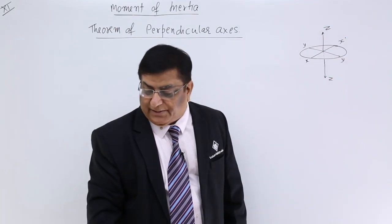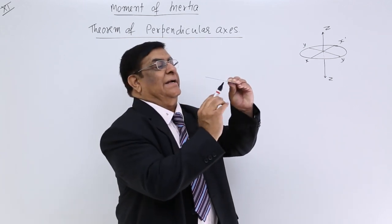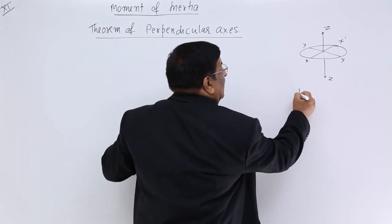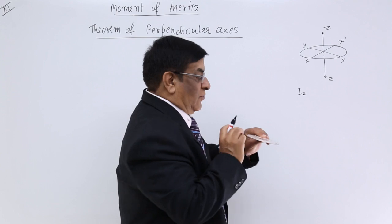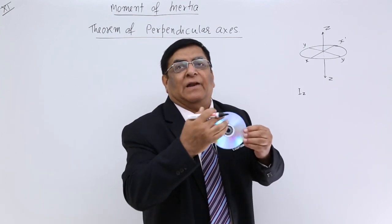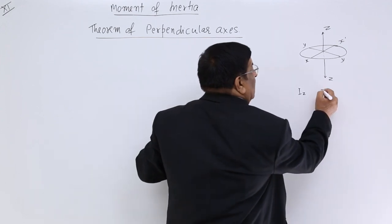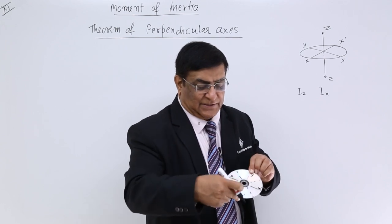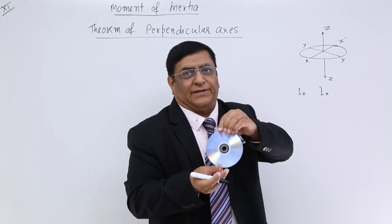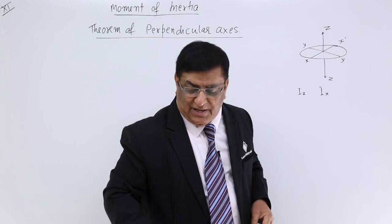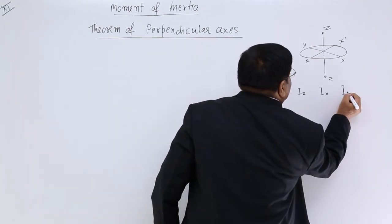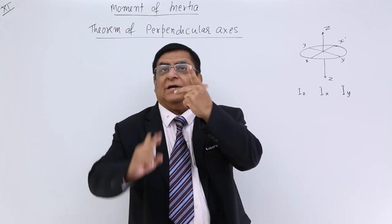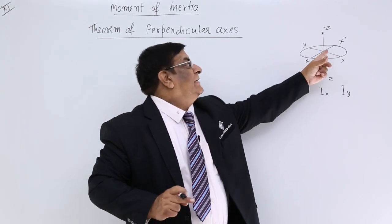Now we rotate it about the z-axis — that is moment of inertia Iz. Rotate it about the x-axis and it will have a certain moment of inertia Ix. Perpendicular to that is y, and rotating about y gives moment of inertia Iy. What is the relation between all three, where all three are perpendicular to each other — one perpendicular to the plane and the other two in the plane?